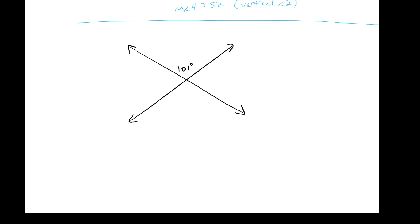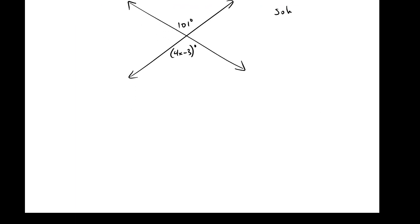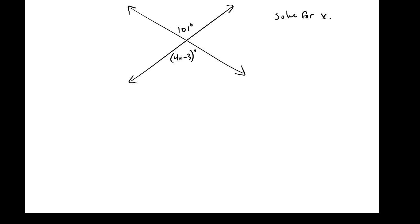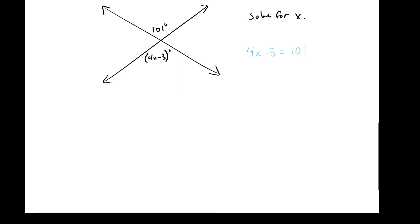Let's do another problem. We have 101 and 4x minus 3, and we are going to solve for x. The big thing is I need justification of how you set up the problem. If you just start writing 4x minus 3 equals 101 and operate on it, that would not get full credit. You need to make sure you tell me these are vertical angles — that's how we came up with that equation as our justification.